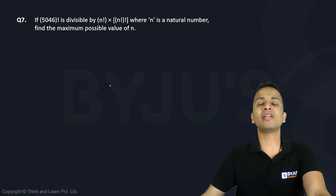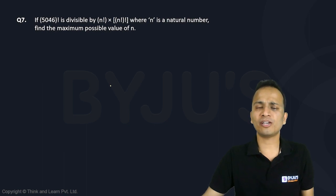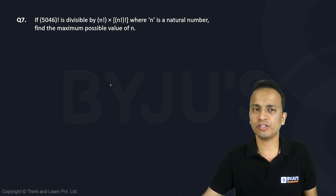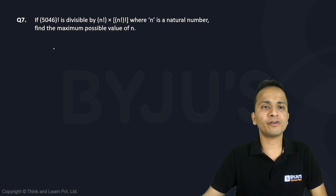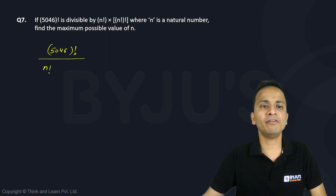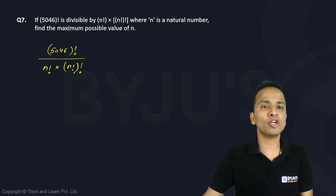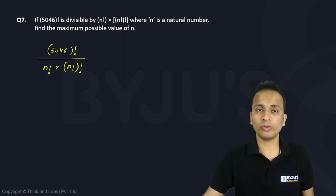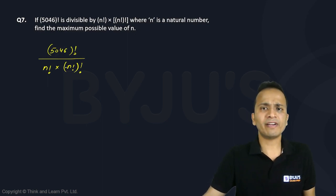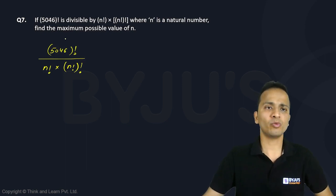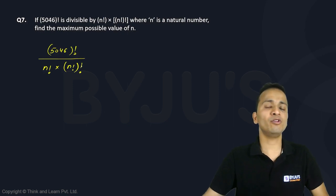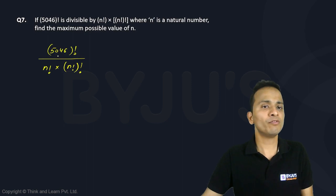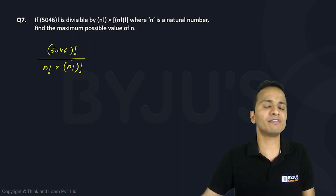Now a wonderful and tricky question on number systems. Since options are not given, we'll have to use a method of trial and error to find the correct answer. The question says that if 5046 factorial is completely divisible by n factorial multiplied by n factorial factorial — note the second term in the denominator: the factorial of n factorial. Also, n is a natural number, and we have to find the maximum possible value of n such that this expression holds true.